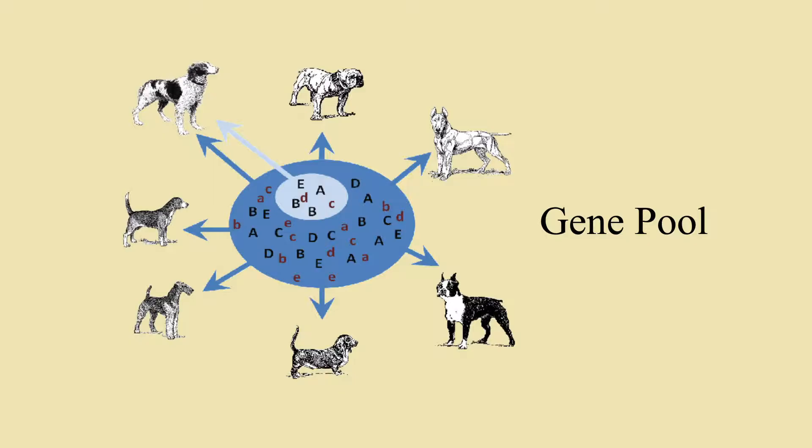So I want to talk now about gene pools. Within a population — let's take dogs for example — there are gene pools for short dogs, tall dogs, dogs with long hair, dogs with short hair, dogs with loud barks and dogs with little barks.